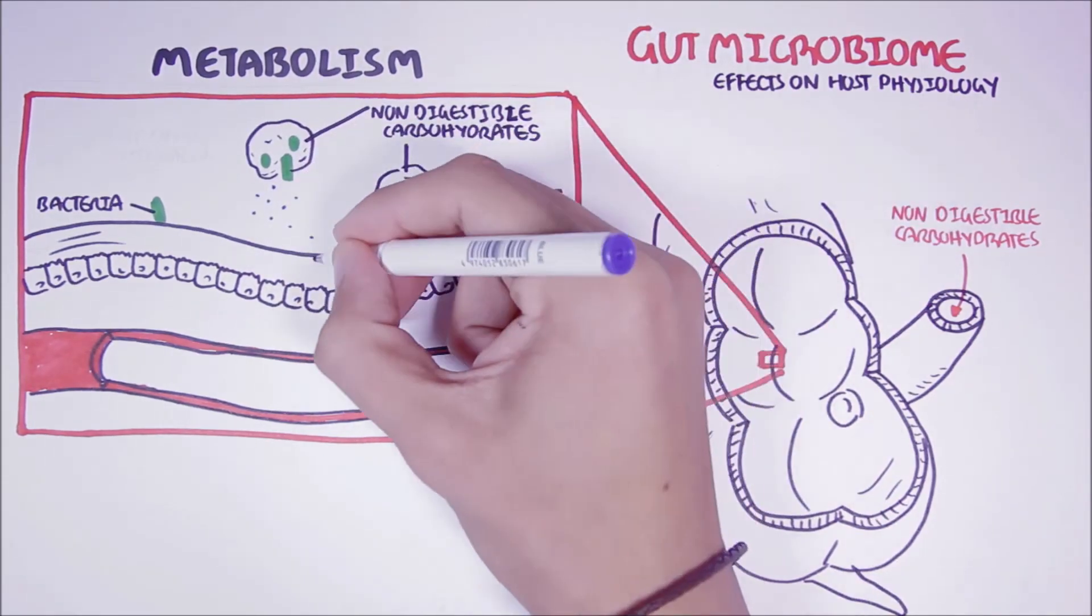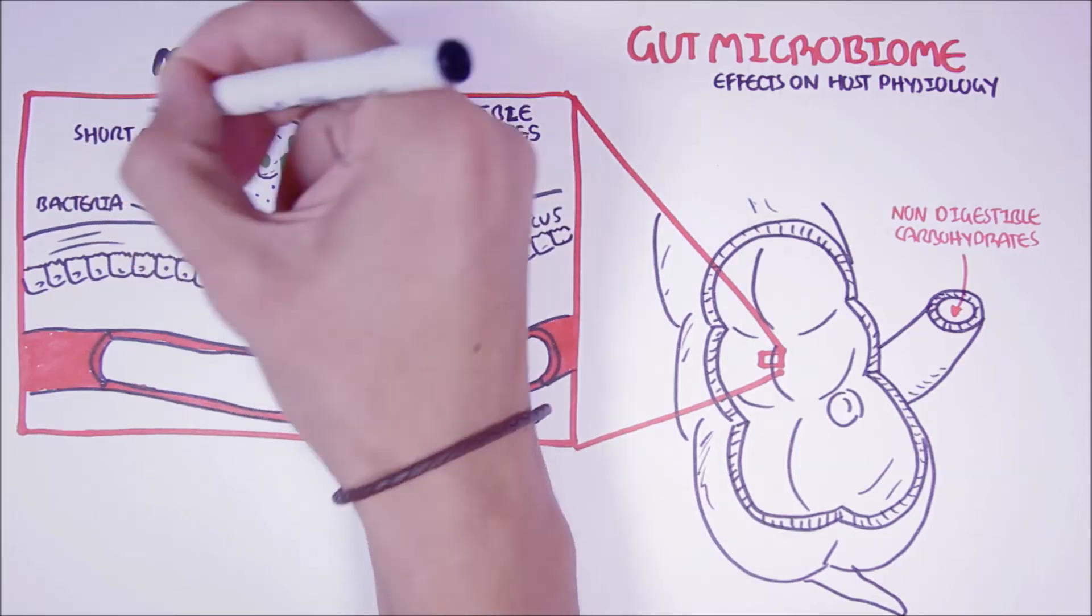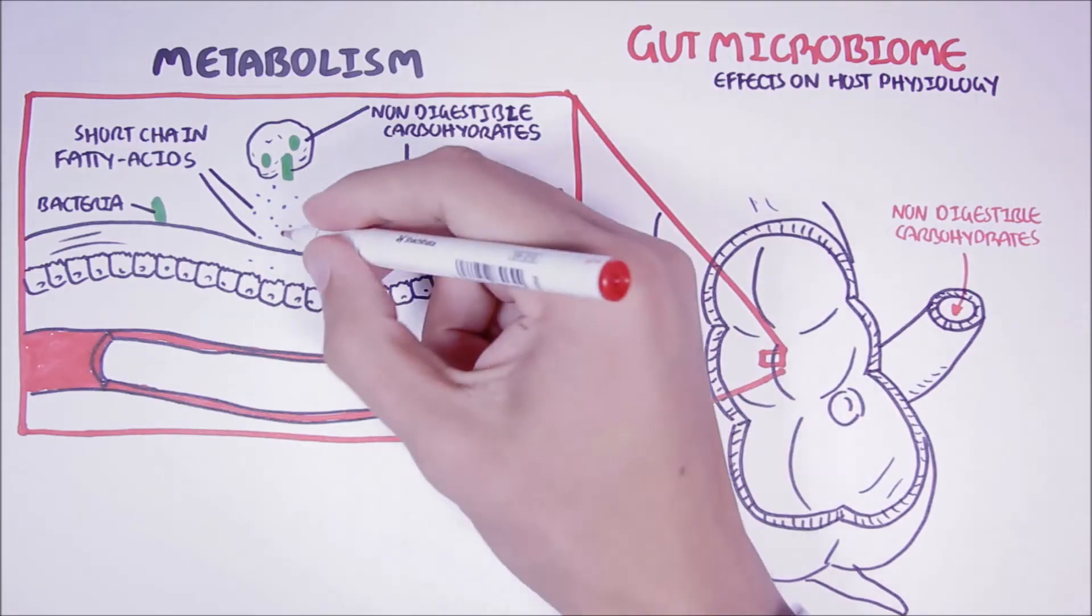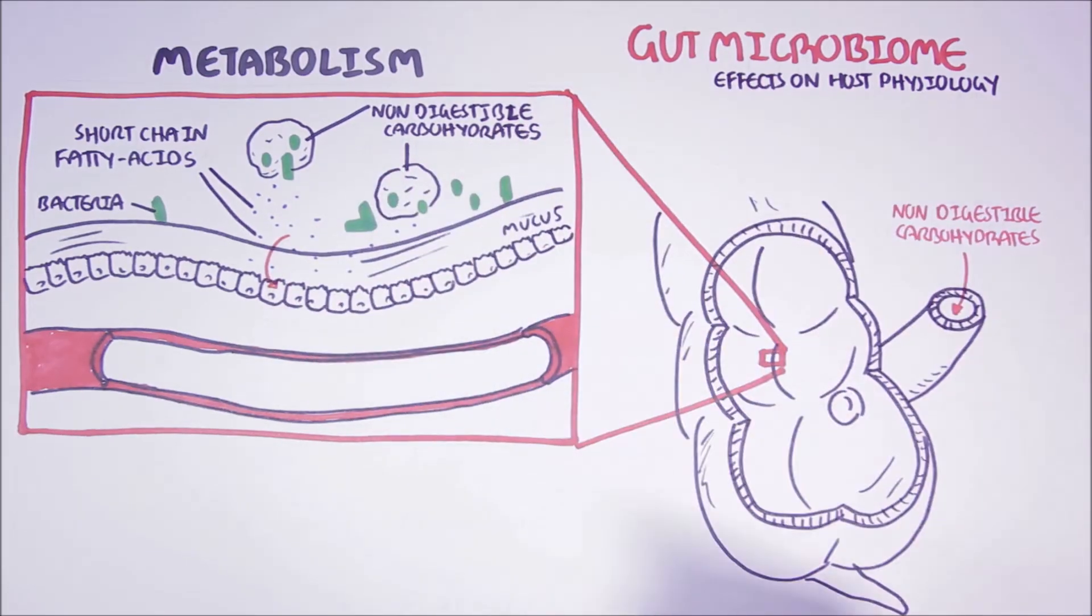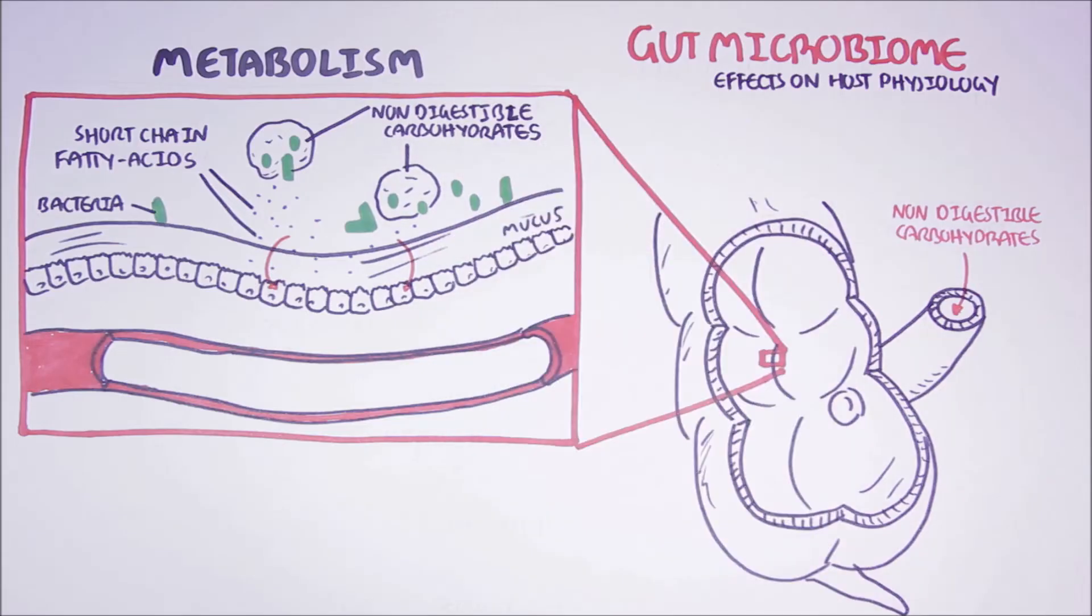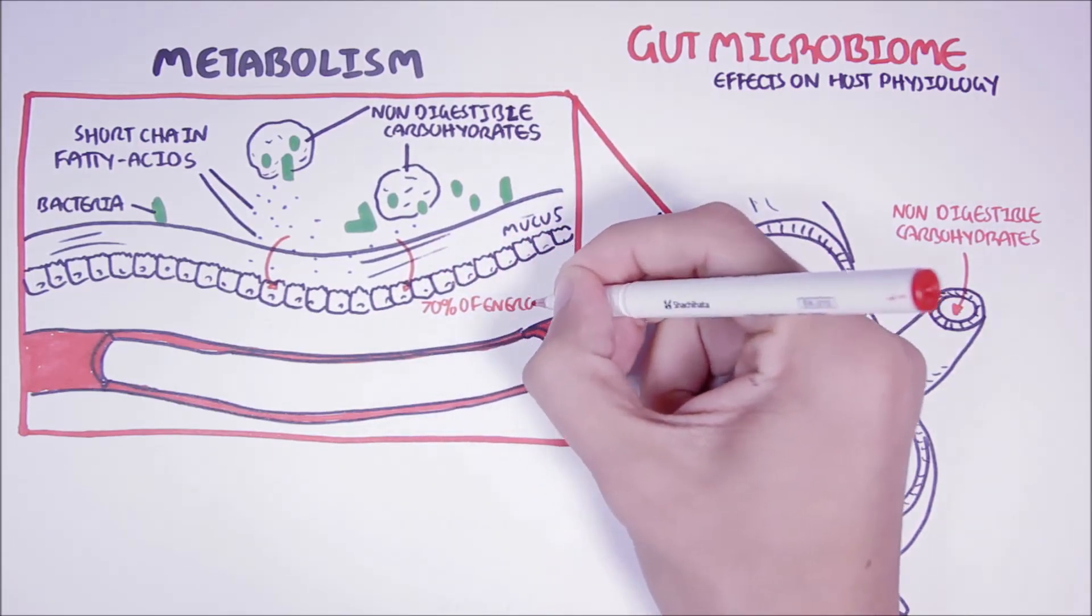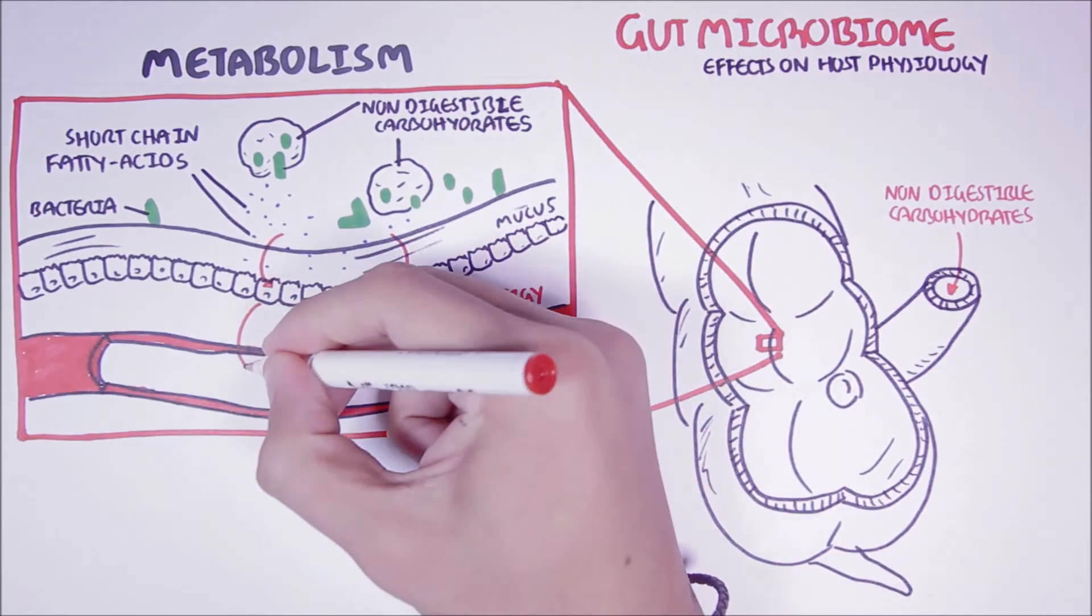Through this fermentation process, the bacteria will produce a by-product, a substance known as short-chain fatty acids. Some of these short-chain fatty acids, such as butyrate, are used as energy by the colon cells. Up to 70% of the energy used by colon cells come from short-chain fatty acids.